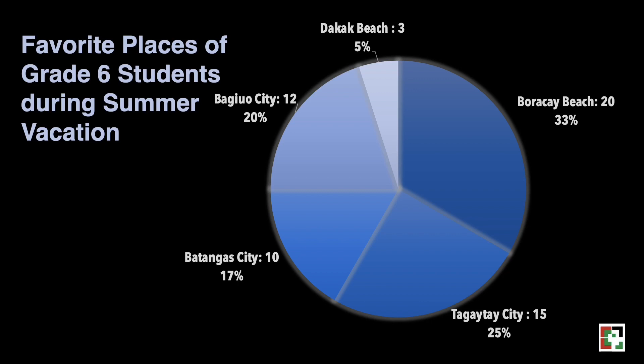After solving the number of degrees in each sector, we can divide the circle by the given angles. The usual way is to work clockwise, starting at 12 o'clock with the larger sector. Use your protractor to measure the degrees in each sector. Based on the pie graph, Turacay Beach is the most preferred place to visit during summer vacation, while Dakak Beach is the least preferred. One-fifth of the class loves Baguio City, and only 5% chose Dakak Beach.